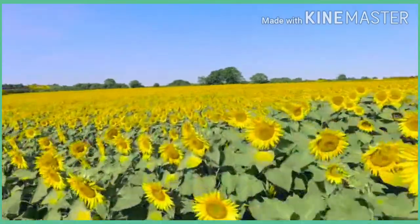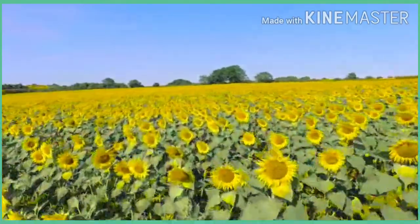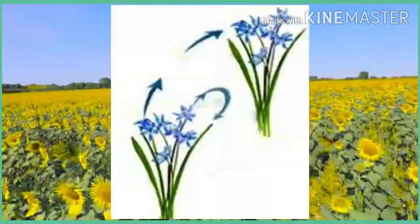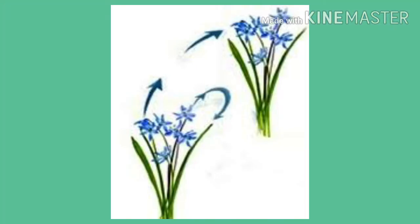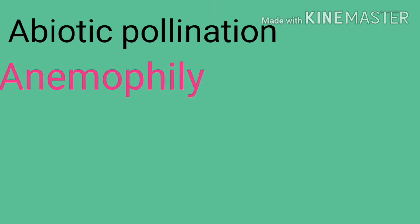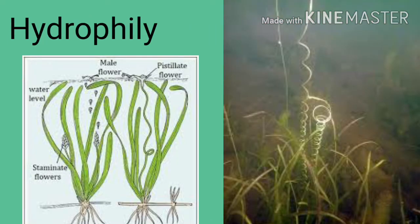The transfer of pollen grains in cross-pollination is accomplished by both biotic and abiotic factors. Coming to abiotic pollination: anemophily — pollination by wind; hydrophily — pollination by water.